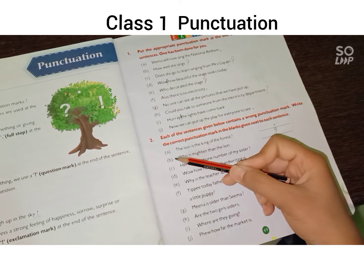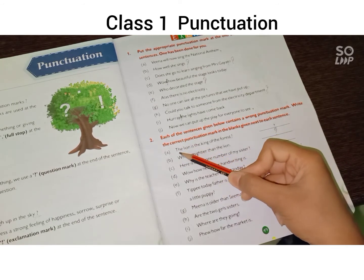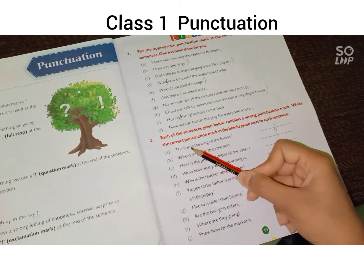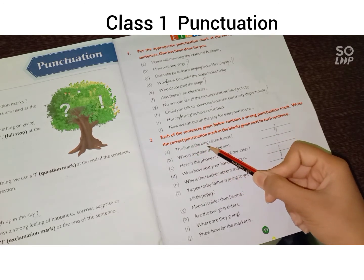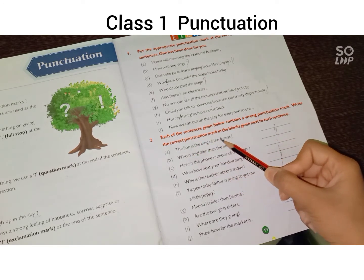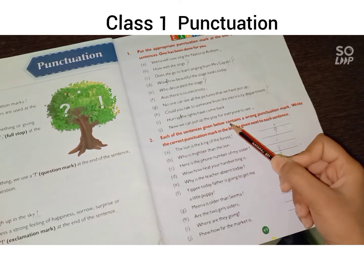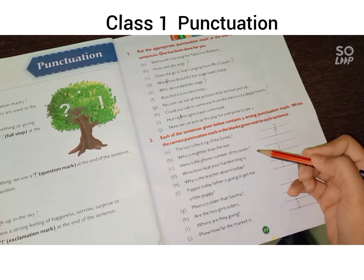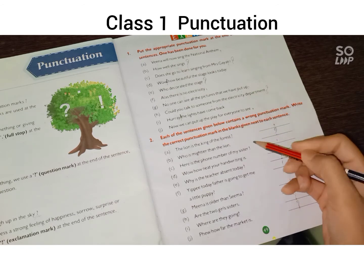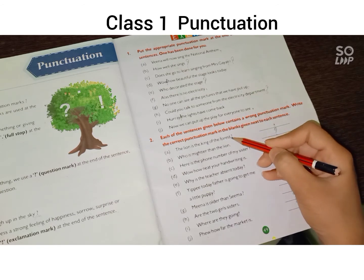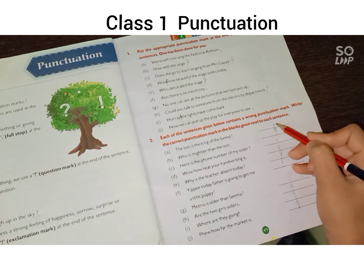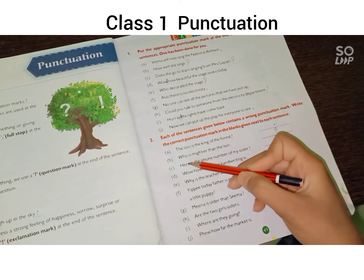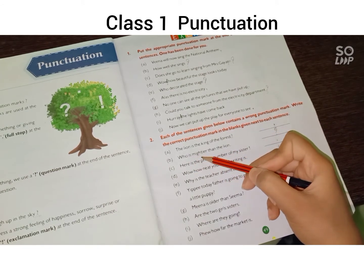Part (a): 'The lion is the king of the forest.' यह एक sentence है तो sentence के last में full stop आता है, ना कि question mark — तो यहां से question mark हटेगा और हम full stop का sign लगाएंगे।